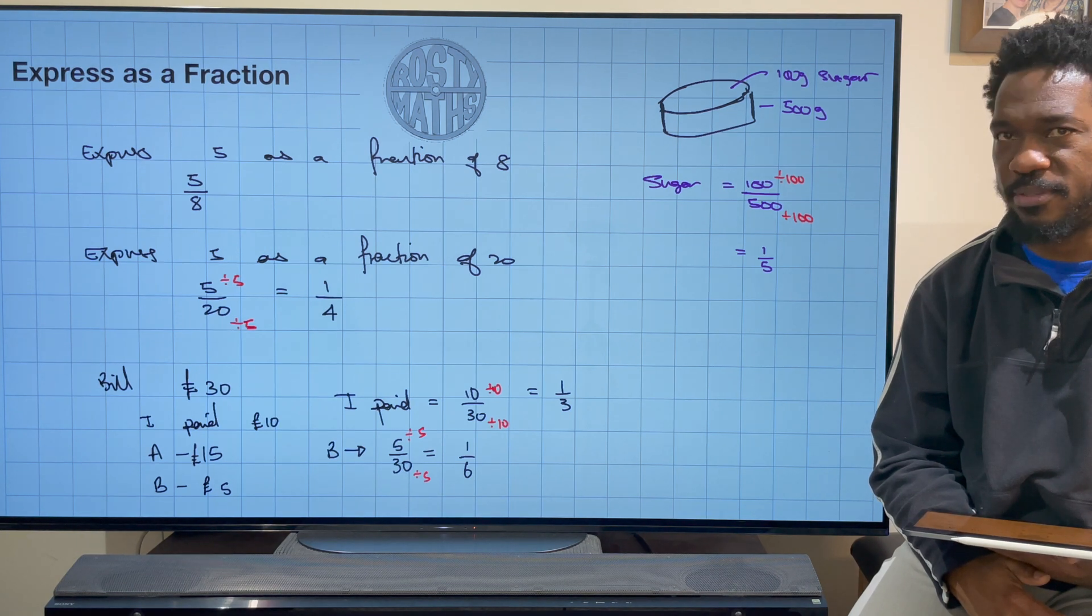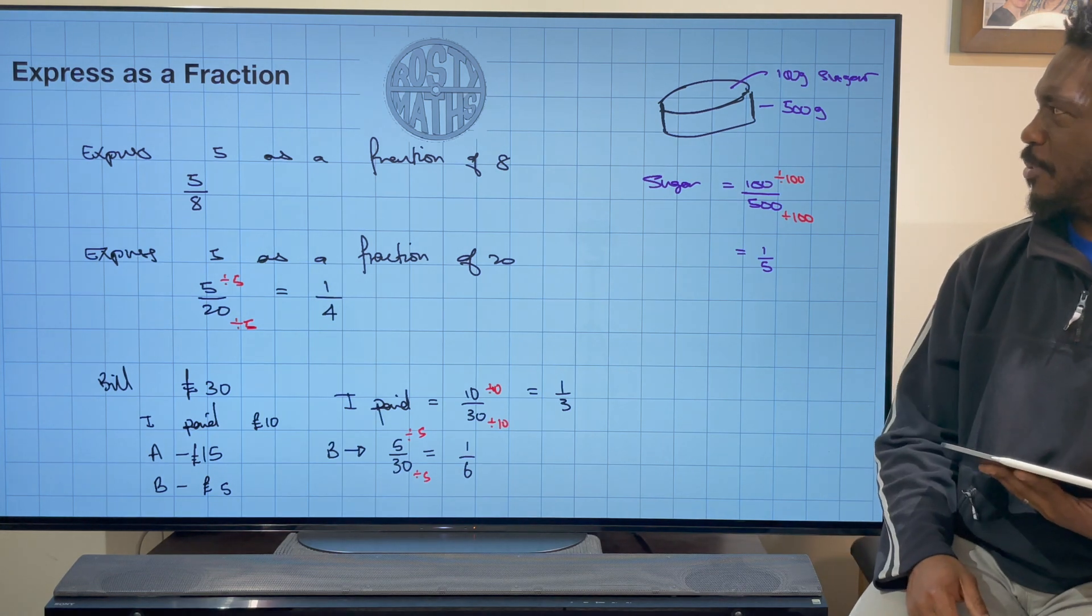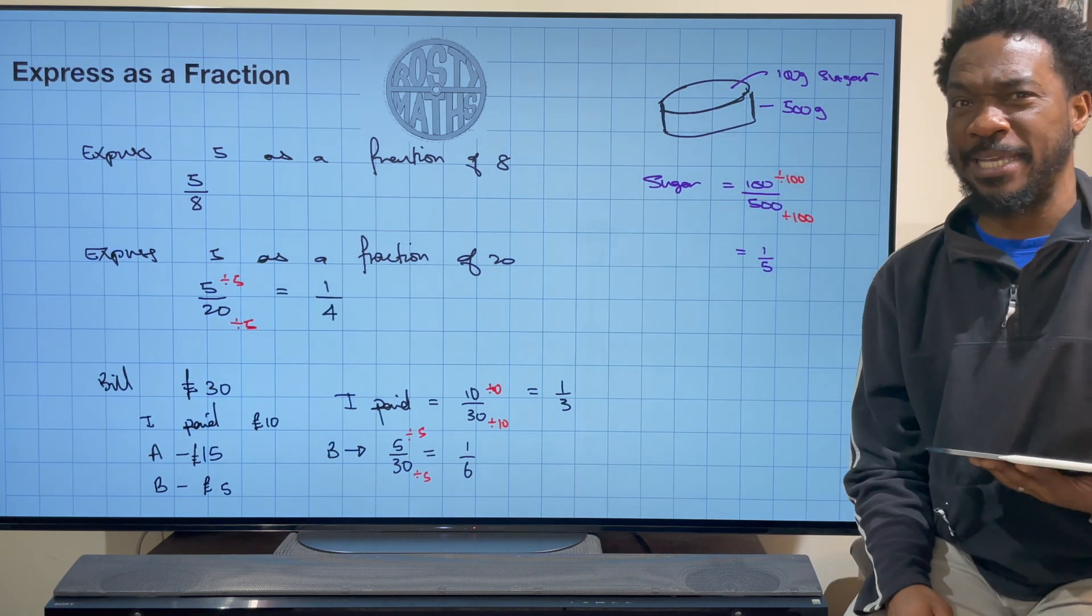And then that's going to mean that one fifth of the cake is going to be sugar, leaving four fifths for everything else. Is this real? Let me know in the comments below. Do we put that much sugar in a cake? Is a cake normally 500 grams? I don't know, I've just made it up anyway.